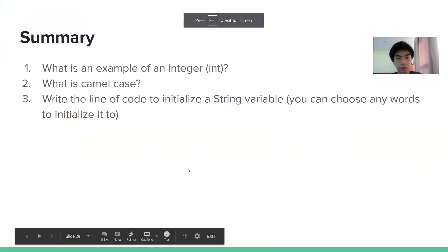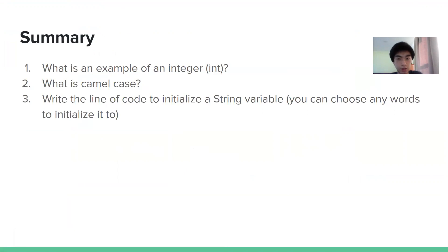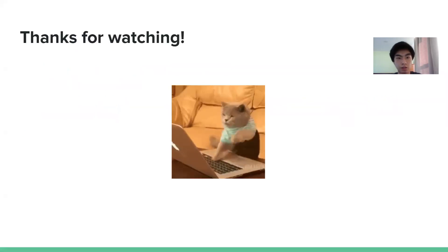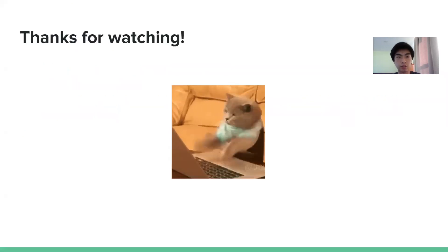Okay, so now let's do a summary. So number one, what is an example of an integer? Or in Java, they're called ints, right? We write int. Number two, what is camel case? Number three, write the line of code to initialize a string variable. So you can choose any words you initialize it to. Remember, strings can be one or many words. And with that, thank you for watching, and I will see you in the next one. Bye.